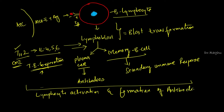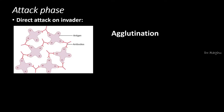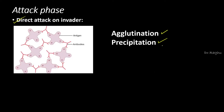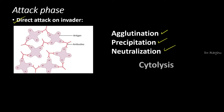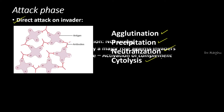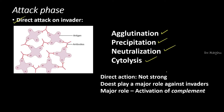Once antibodies are formed, they attack by two methods. The first is a direct attack, which can kill the antigen by agglutination, precipitation, neutralization, or cytolysis. However, the direct method is not a strong method and does not play a major role against invaders.